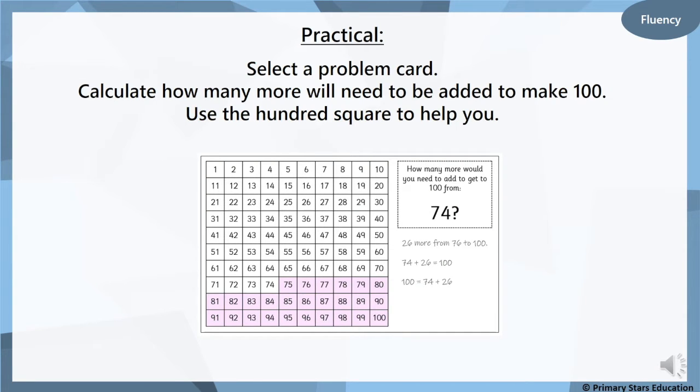This is part of your activity now. You can download one of these problem cards and you can have a look at some different sheets and looking at different numbers count up how many more you would need to make 100. And you can use that 100 square there to help you. So just like the activity we've just looked at on the board together, this is what you can have a go at at home. You don't have to download the sheet. You can always use your 100 square mini whiteboard that you've got at home as well.